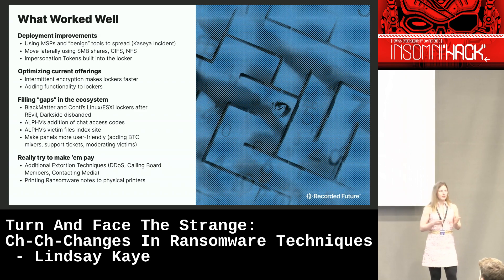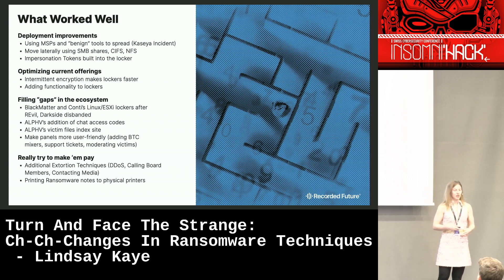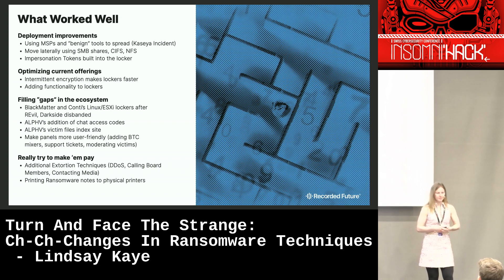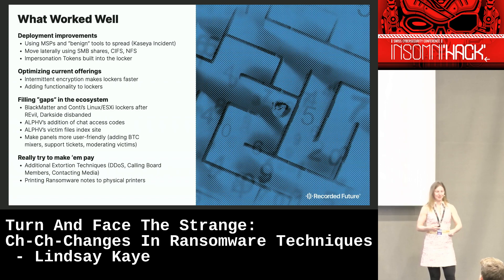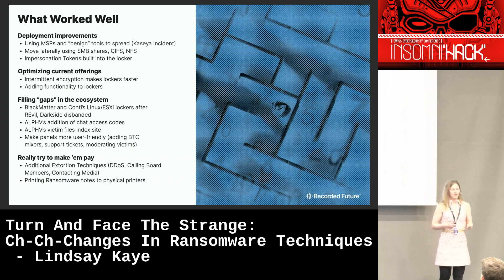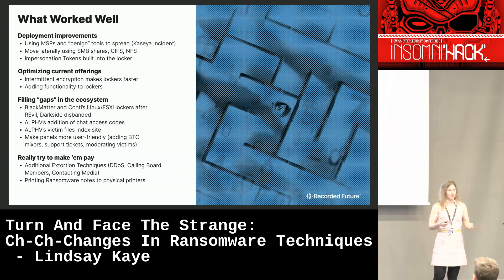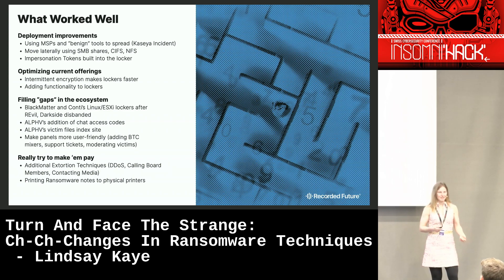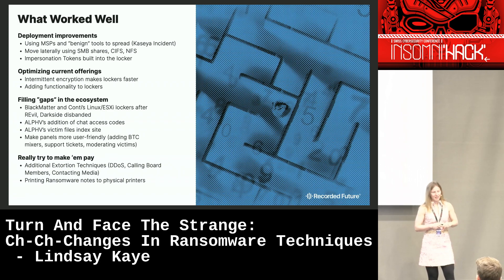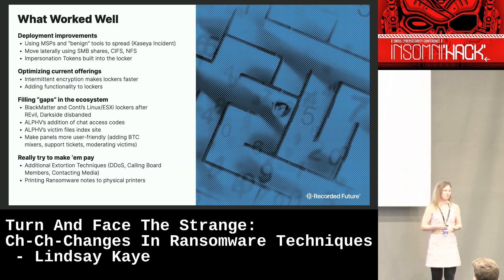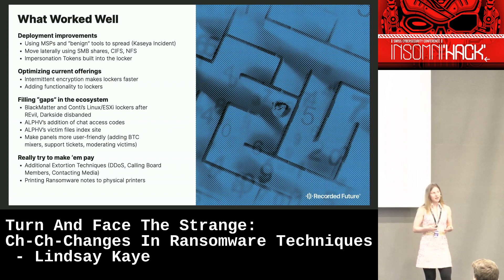We're also seeing groups fill gaps in the ecosystem. A well-known example is BlackMatter and Conti coming out with a Linux and ESXi locker after Reval and DarkSide disbanded, since there weren't really any of those offerings. Additionally, Alpha's addition of a chat access code to prevent chat hijacking, a victim files index site allowing searchable access to victim files, and making panels more user-friendly — adding things like Bitcoin mixers, affiliate support tickets, and helping them moderate their victims.